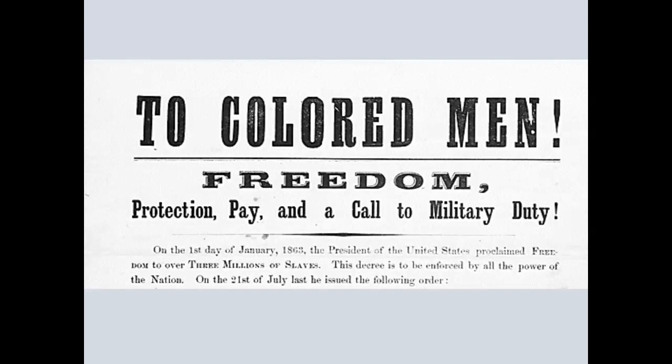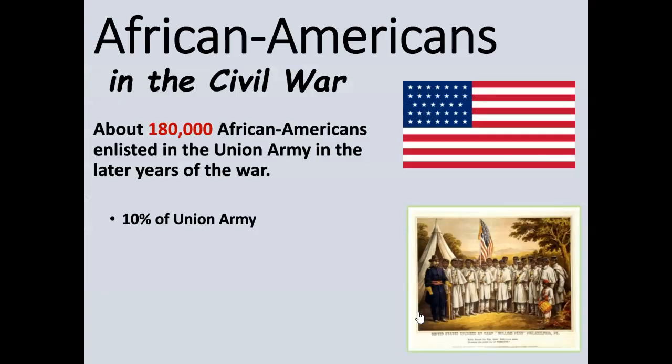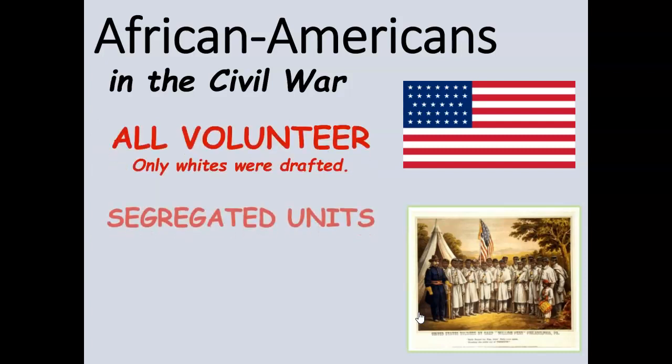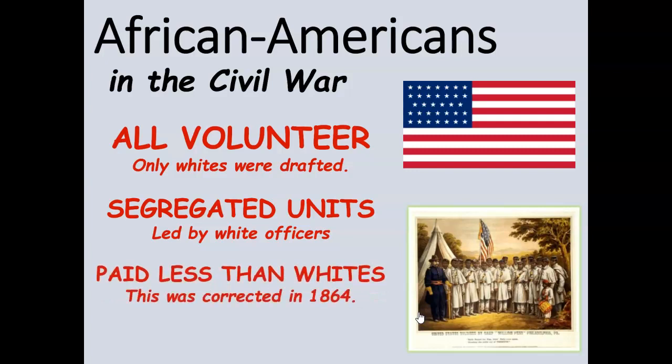The Union starts to advertise for black men to join the military. By the end of the Civil War in 1865, about 10 percent of the Union Army — roughly 200,000 people altogether — were African-Americans. This was all volunteer; only white soldiers were drafted, and the draft was controversial. Black soldiers served in segregated units led by white officers, were often assigned some of the more difficult battles, and up until a certain point were paid less than white soldiers.